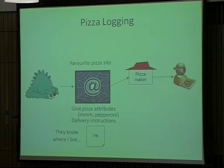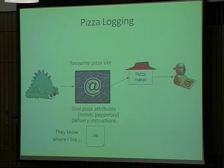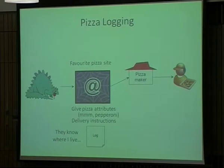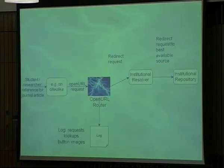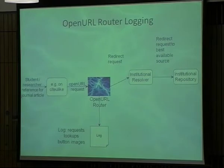The clever folks at the pizza site have a log of what I've put in and they know where I live. Last time I entered this pizza, they tracked it and they always remember my address. The OpenURL router is also not just a clever little piece of code — it also logs all of the things that people are looking for. It doesn't know if they find them or not, but it does know what people are looking for. That's quite unique.